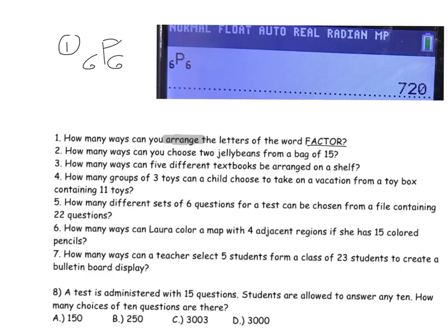Remember, permutations and combinations are on the math menu — go over to PRB or PROB for probability.